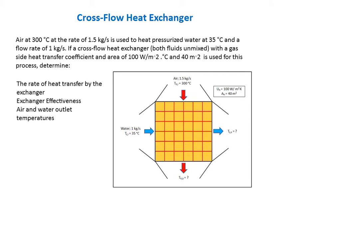In this example, we're going to look at air at 300 degrees Celsius at the rate of 1.5 kilograms per second that's used to heat up water at 35 degrees C and a flow rate of 1 kilogram per second. We have a cross flow heat exchanger with both fluids unmixed, a gas side heat transfer coefficient of 100 watts per meter squared C, and an area of 40 meters squared. We want to determine the rate of heat transfer, the effectiveness, and the air and water outlet temperatures.